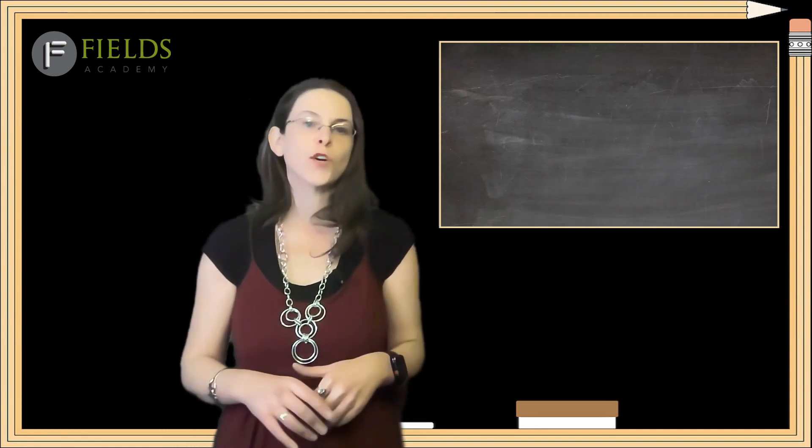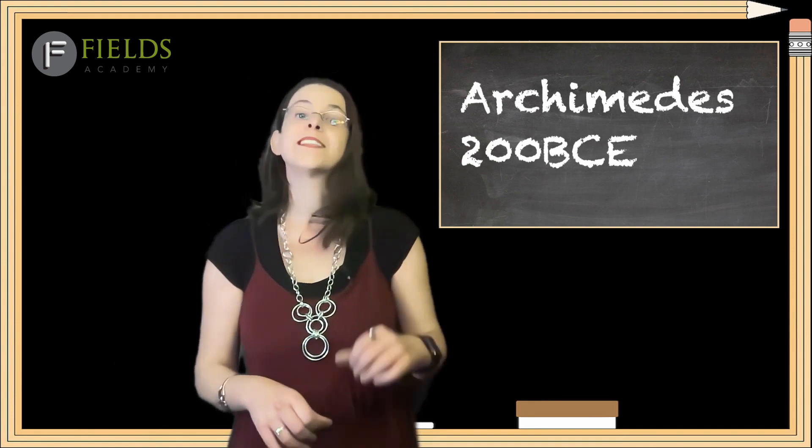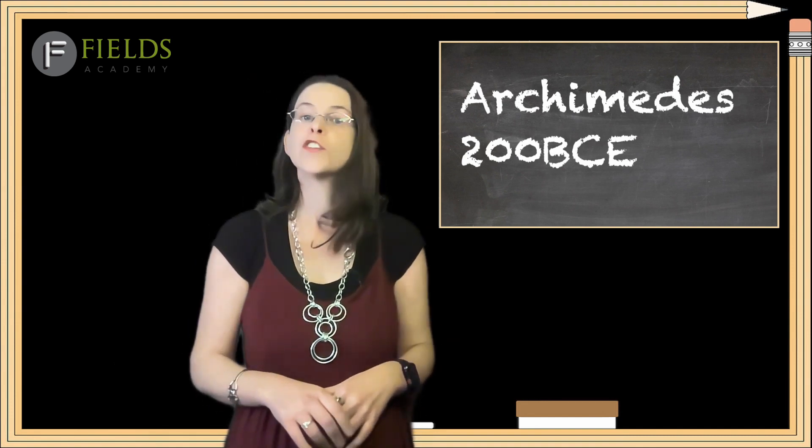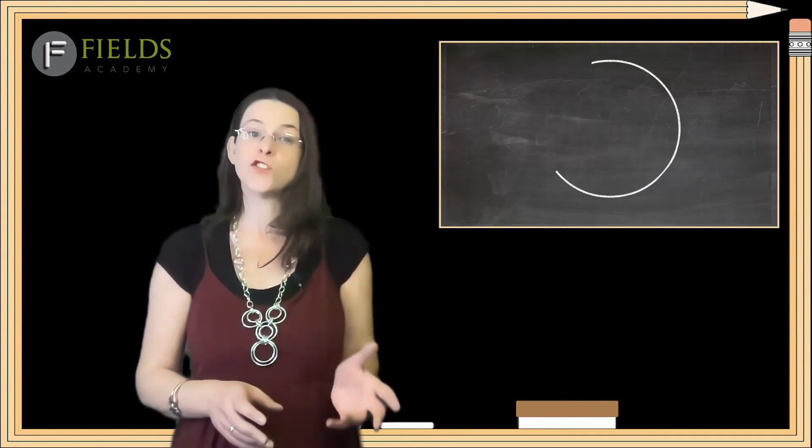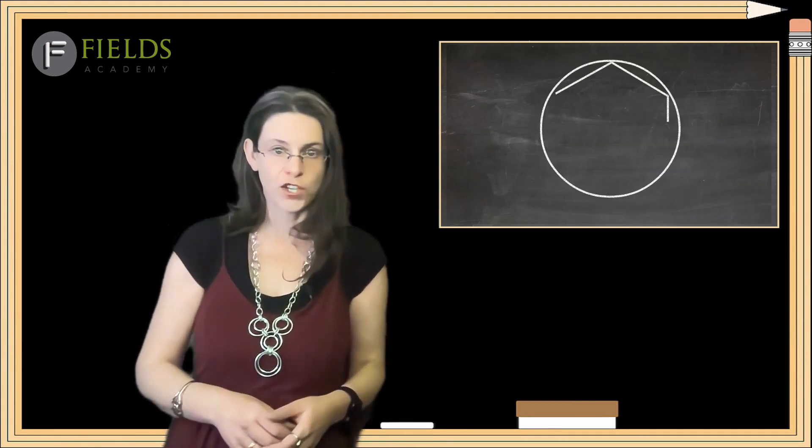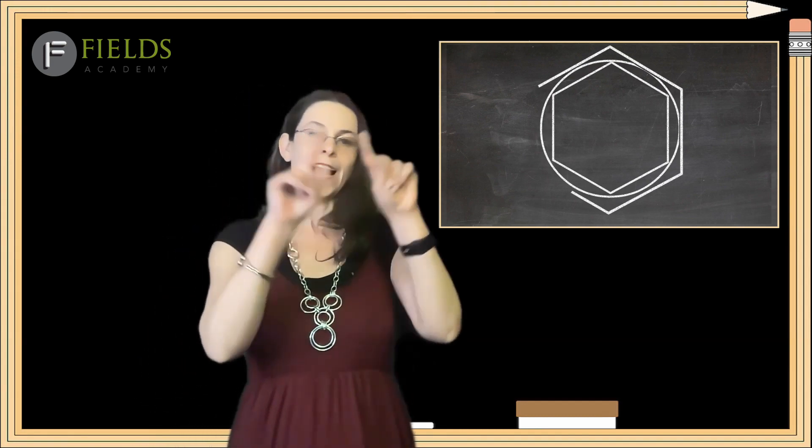Next, the ancient Greek mathematician Archimedes, 200 BCE, used similar geometric principles to further investigate pi. He started with a circle with a diameter of 1, then he drew a hexagon, a six-sided shape, inside the circle. Now, he added another one outside.